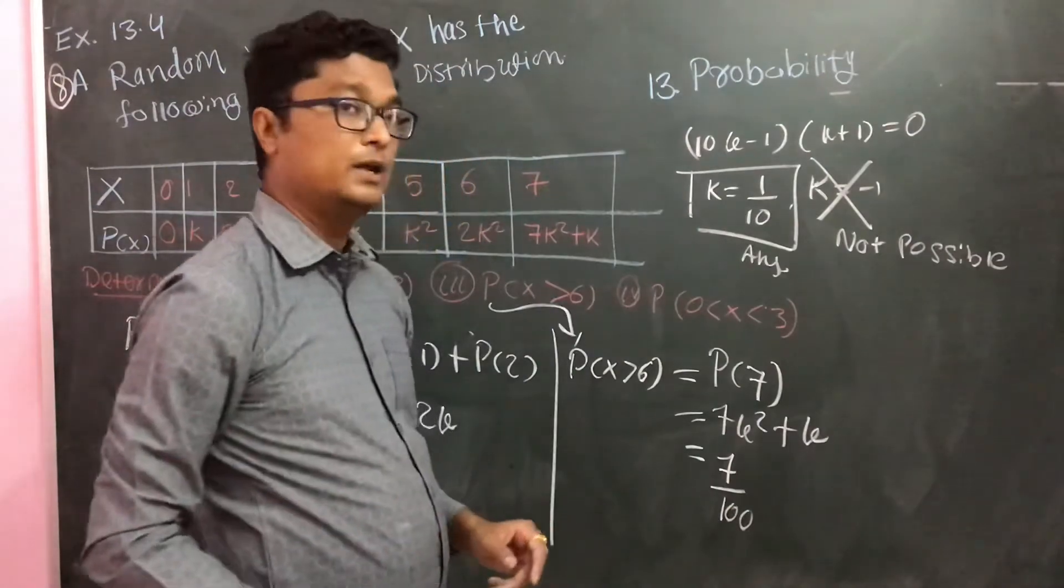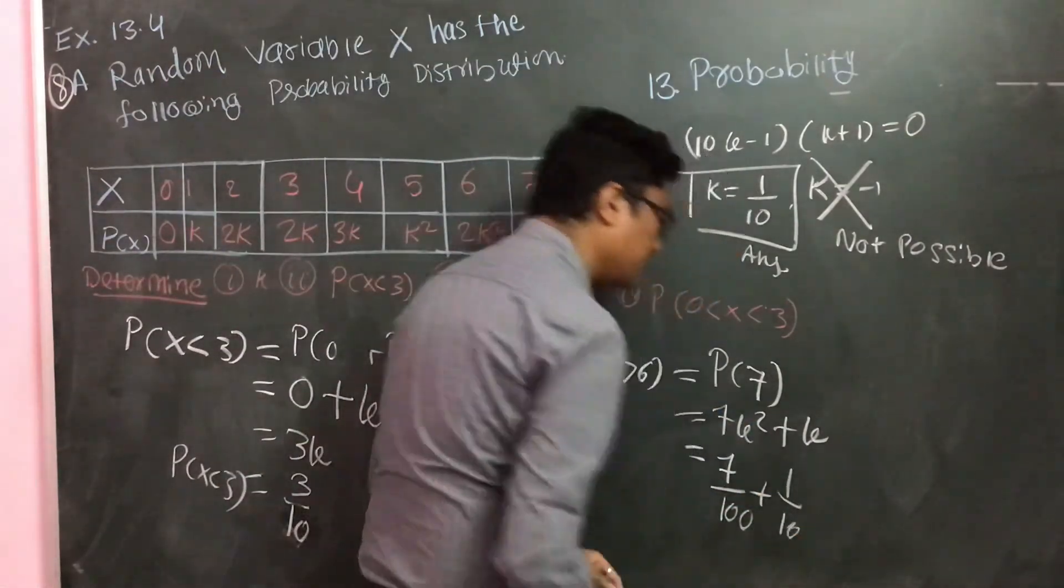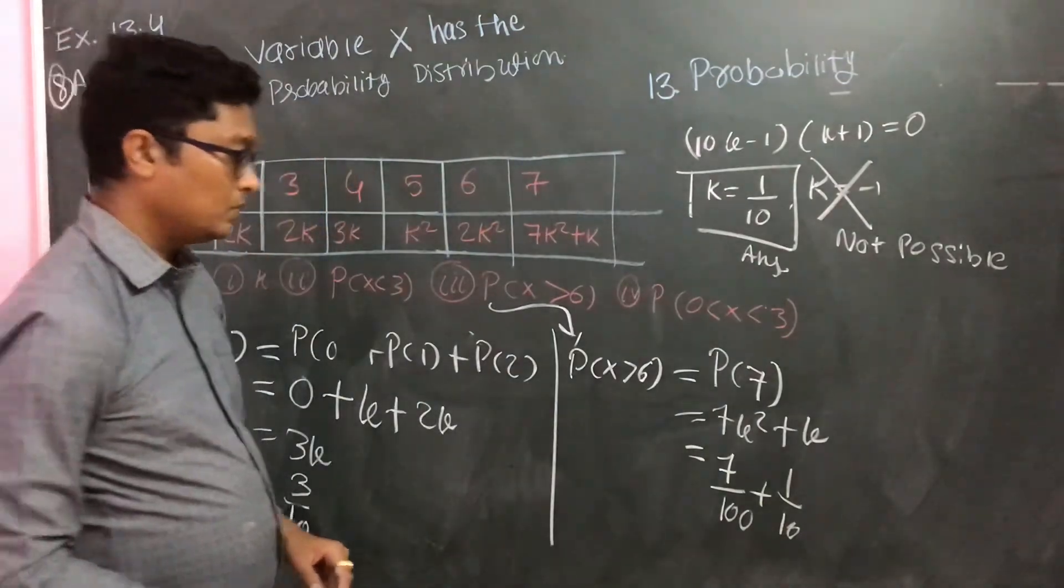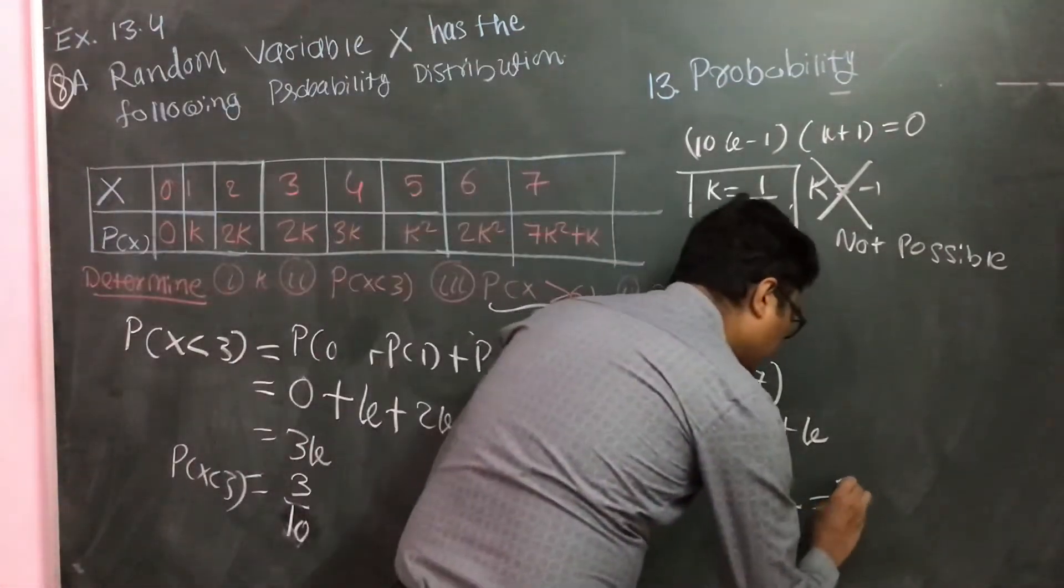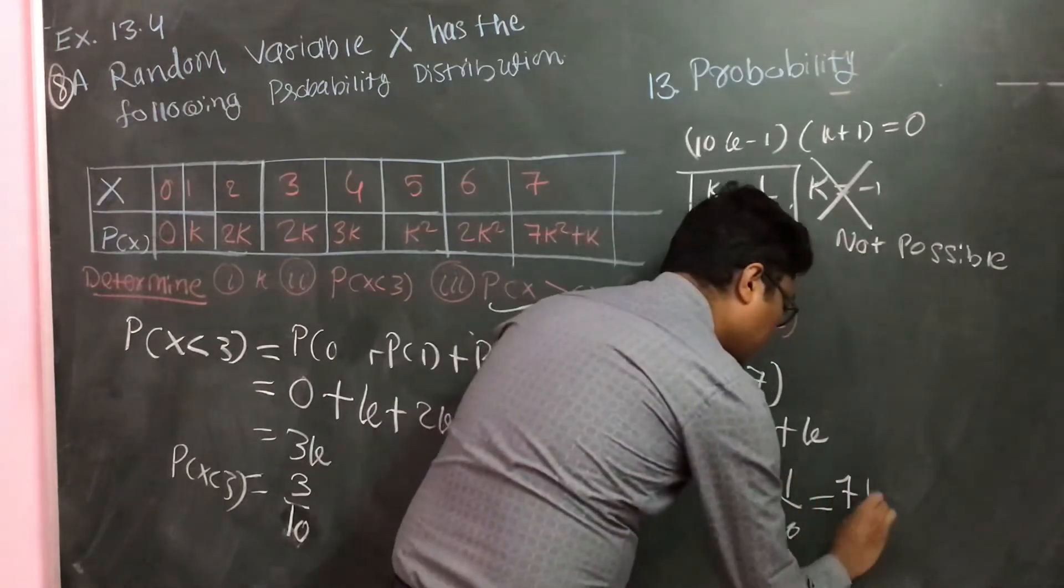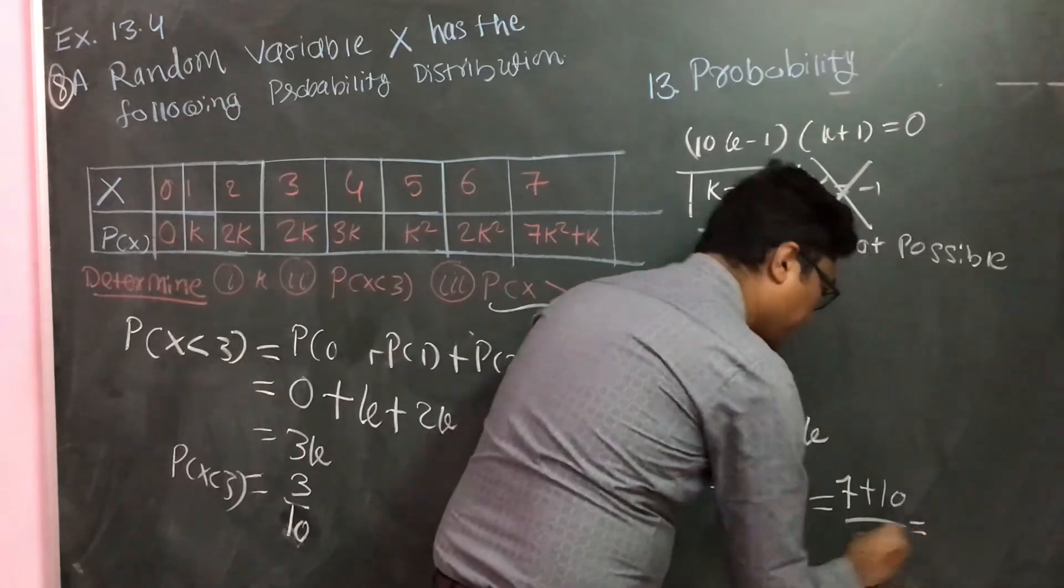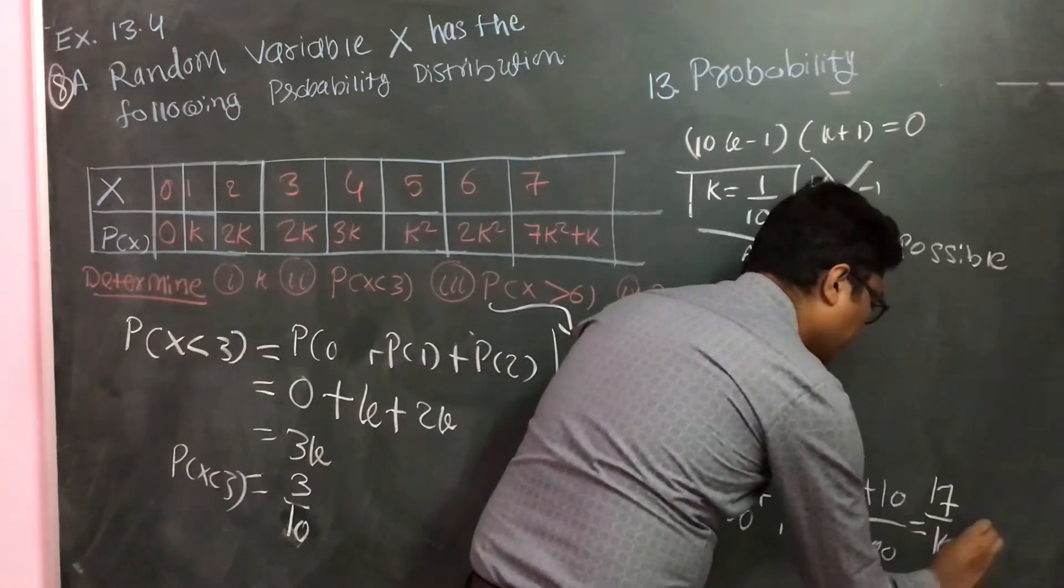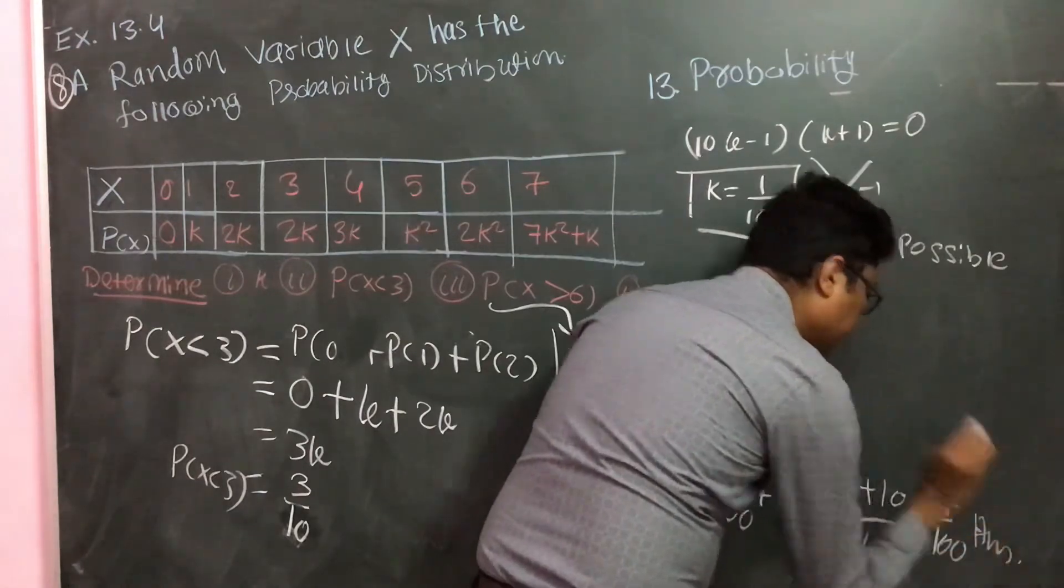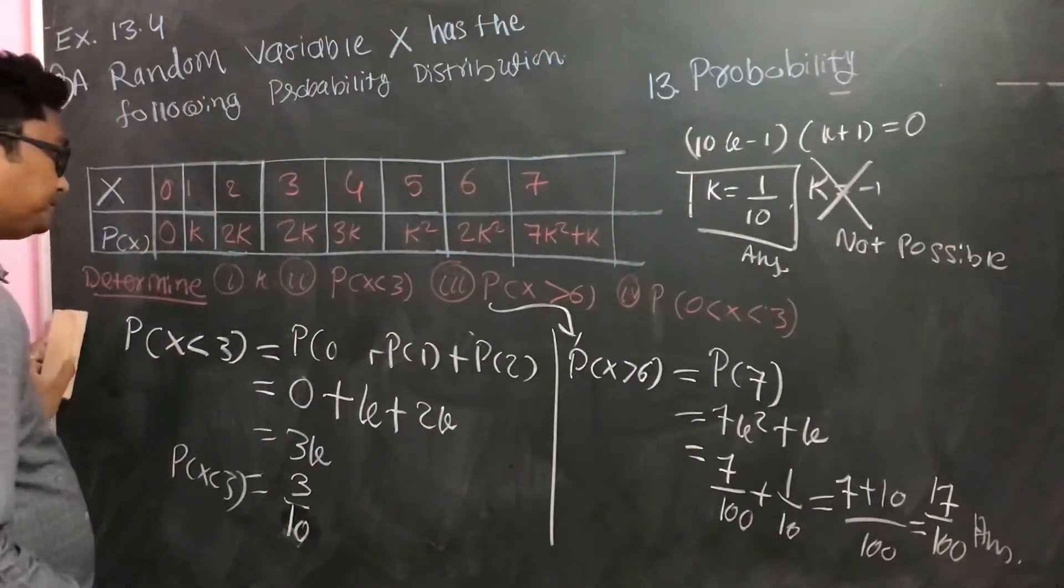So here you can see 7 times 1 by 10 square, it is 7 by 100, and plus k, k is again 1 by 10. What you can do is take LCM and put it like this: 7 plus 10 upon 100, and that is 17 by 100. So this is your third answer.